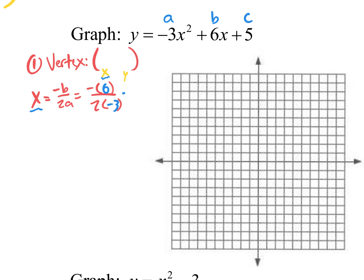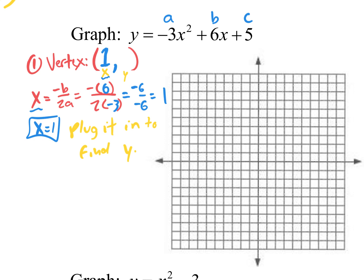So plugging in: negative b is negative 6 on top, and 2 times a is 2 times negative 3, which is negative 6 on the bottom. What is negative 6 divided by negative 6? Positive 1. So we just found the x value of the vertex — x equals 1. We still need the y value, so plug x equals 1 into the original function.